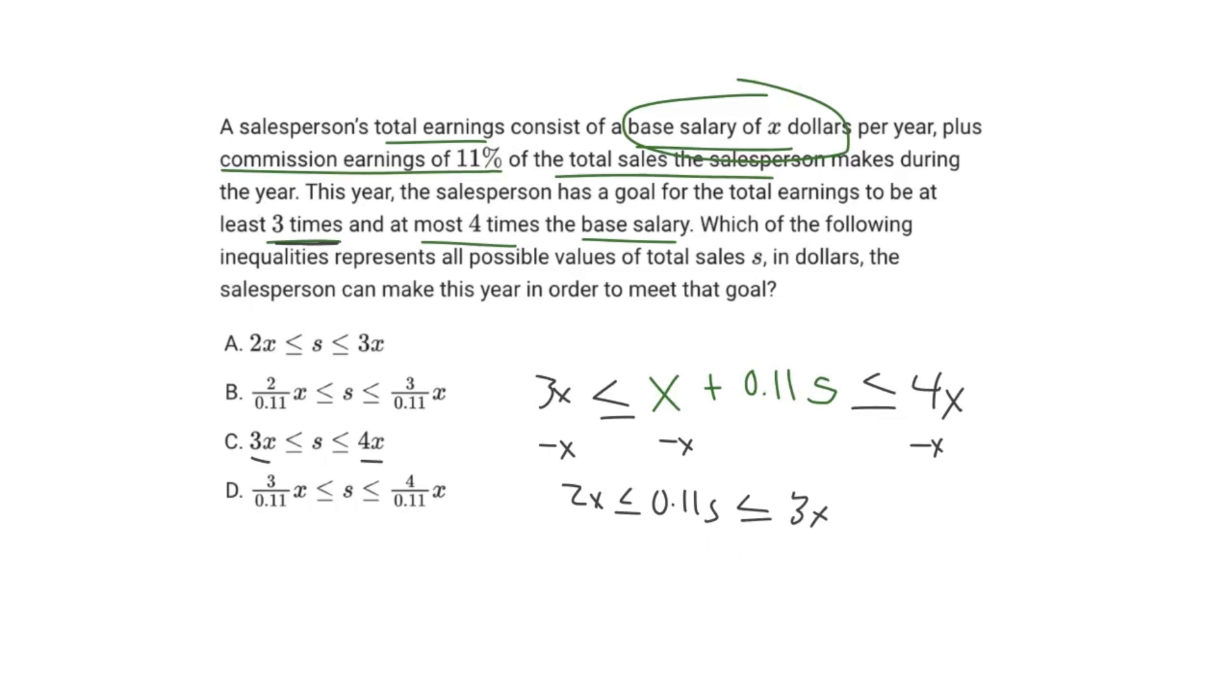And now again, we want to isolate for S because you see in all these answer choices, S is by itself in the middle as the total sales. Therefore, we can just divide all sides by 0.11.